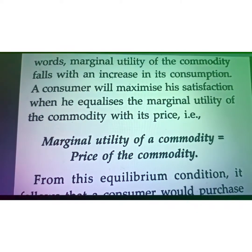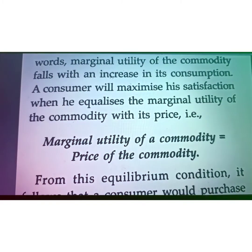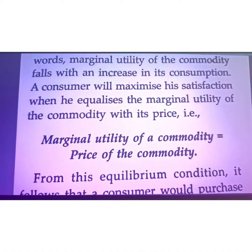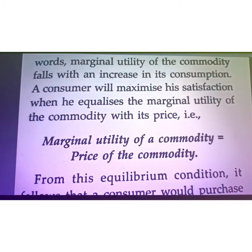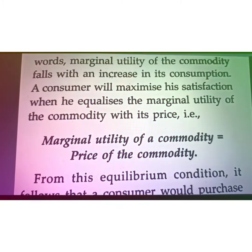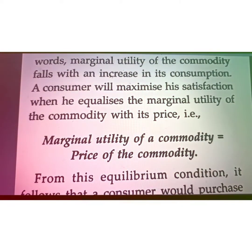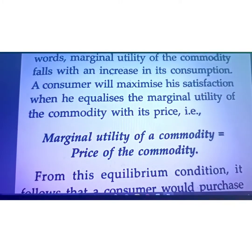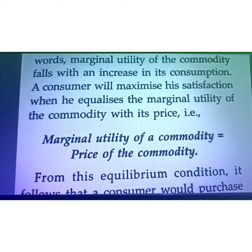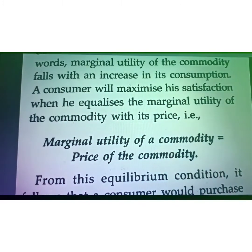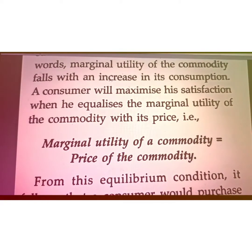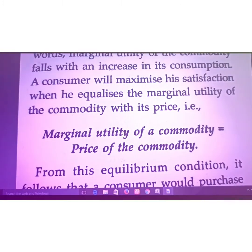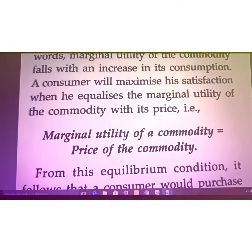In the same way, after every additional unit consumed, the satisfaction level of the consumer comes down, so they are willing to pay less. We can see from the schedule that at 100 rupees you are willing to purchase one unit, at 80 rupees two units, at 70 rupees three units — and so on. This is why the demand curve has a negative slope.